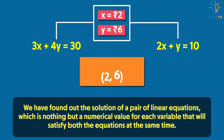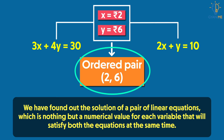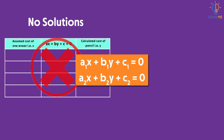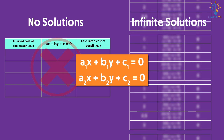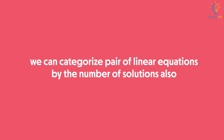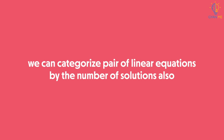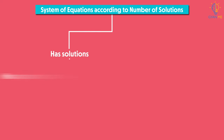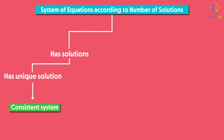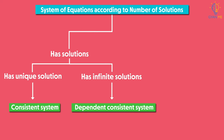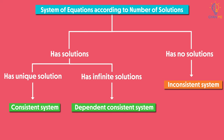We can represent the solution as the ordered pair (2, 6). In our example, we got a unique solution. But sometimes a pair of linear equations may not have a solution, and sometimes a pair may have an infinite number of solutions. Accordingly, we categorize pairs by the number of solutions. When a system has a unique solution, it is called a consistent system. A consistent system with infinite solutions is called a dependent consistent system. When a system has no solution, it is called an inconsistent system.